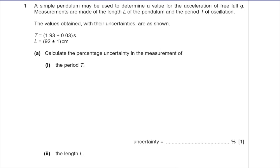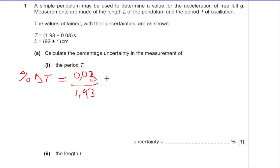Part A says: calculate the percentage uncertainty in the measurement of the period T. The percentage uncertainty in T is equal to the absolute uncertainty of T, which is 0.03, divided by the measurement T, which is 1.93. If you work that out, you get 1.55 percent.